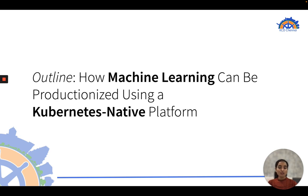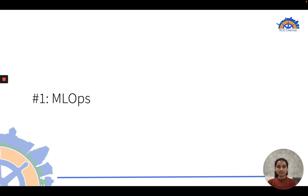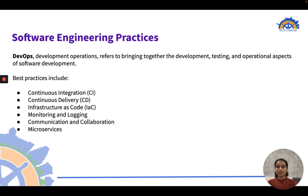The crux of this talk is to know how machine learning can be productionized using a Kubernetes native platform, which in our case is Flight. Let's get started by understanding how MLOps differs from DevOps. To automate and smoothen the process of software engineering, we follow a set of practices we call DevOps — Development Operations — which brings together the development, testing, and operational aspects of software development.